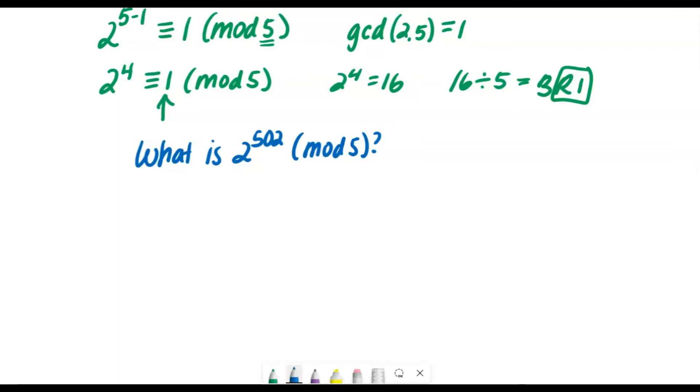Well, we could use Fermat's Little Theorem, which tells us that two to the power of, as we just learned, five minus one must be congruent to one in mod five. So only if we could rewrite two to the power of 502 using two to the power of four, because we know that that is congruent to one in mod five.